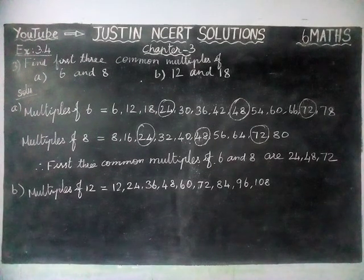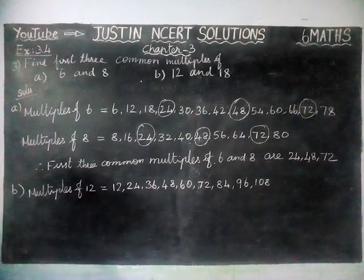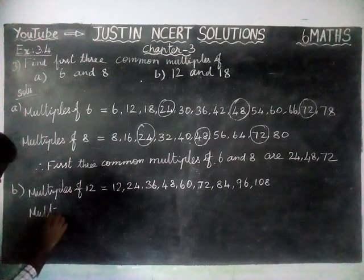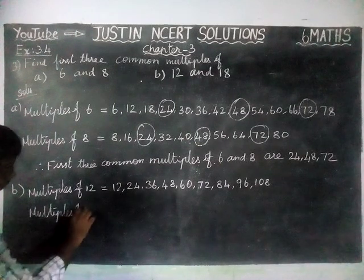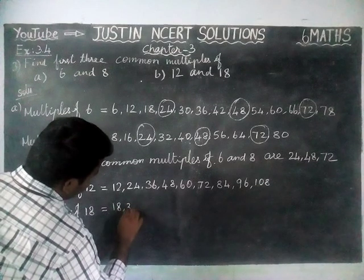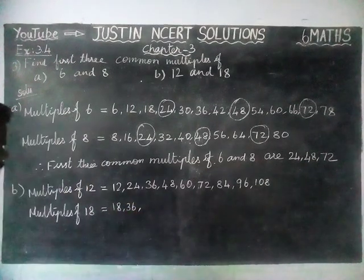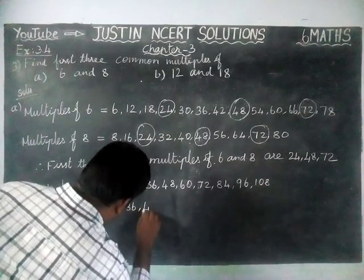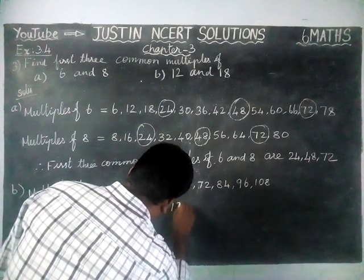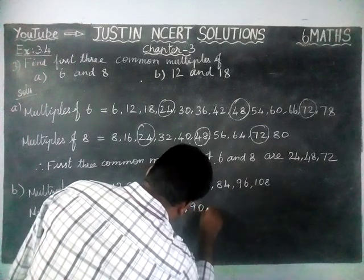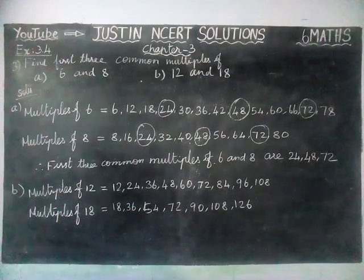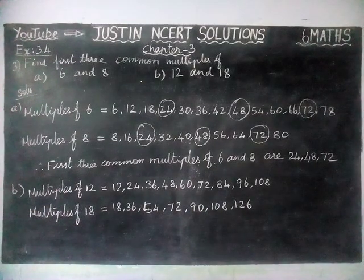We will write the multiples of 18: 18, 36, 54, 72, 90, 108, 126. These are all the multiples of 18.